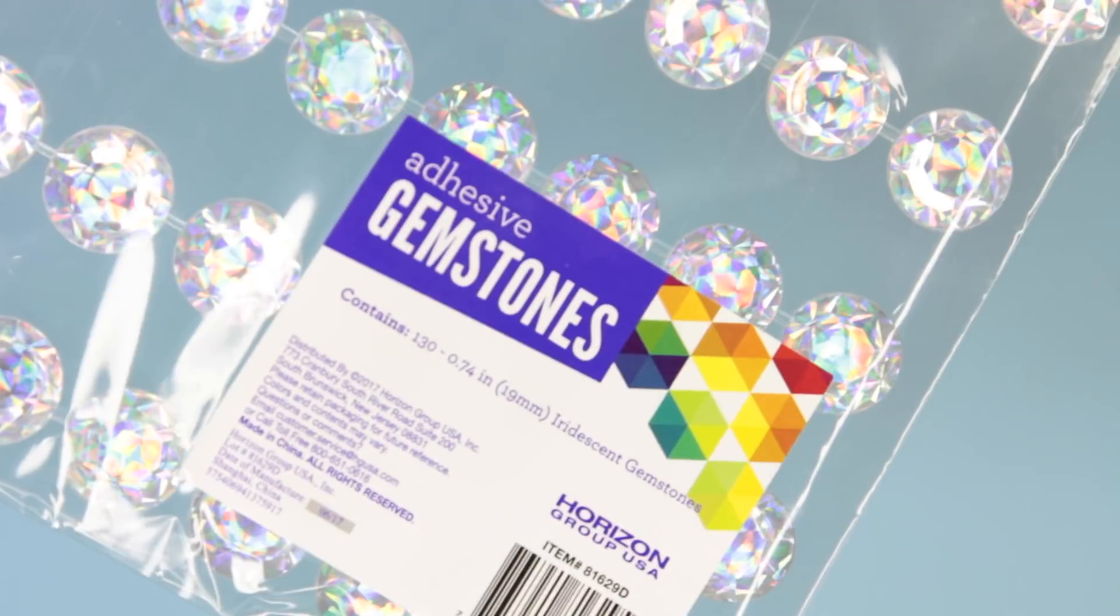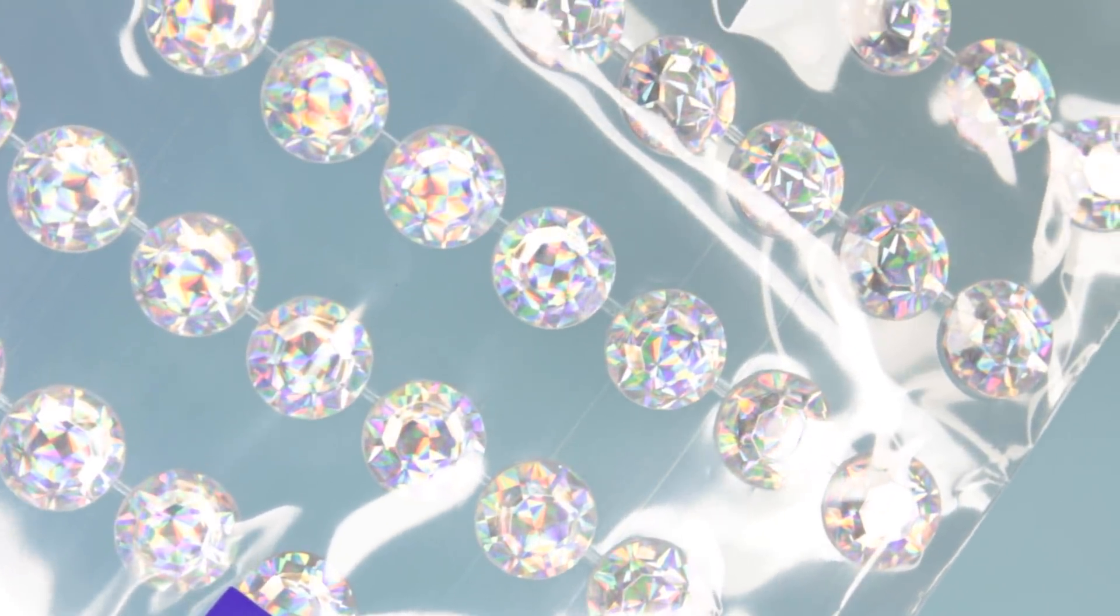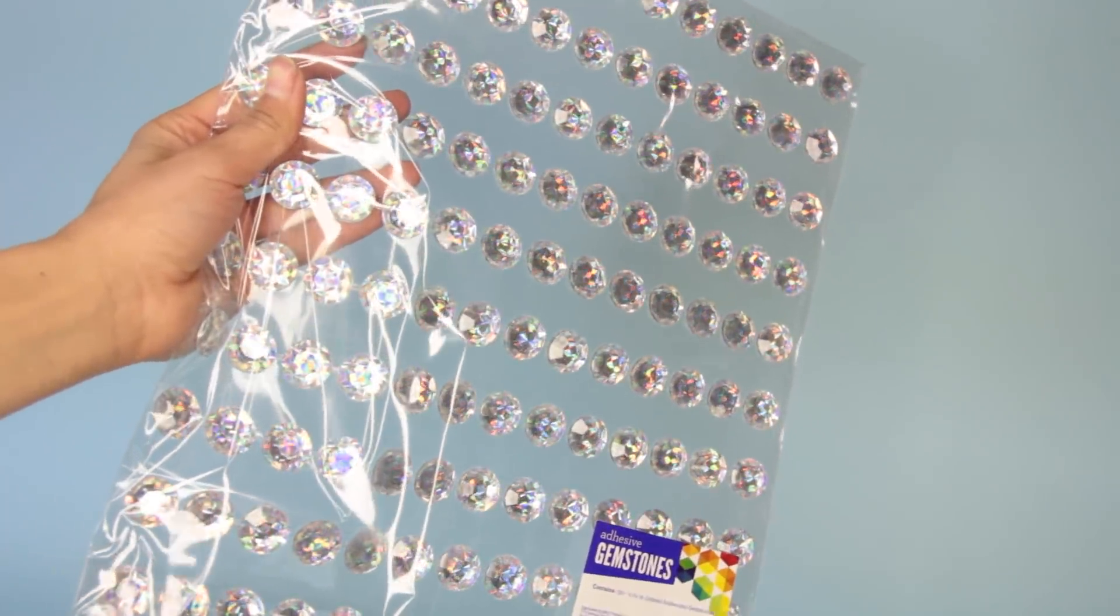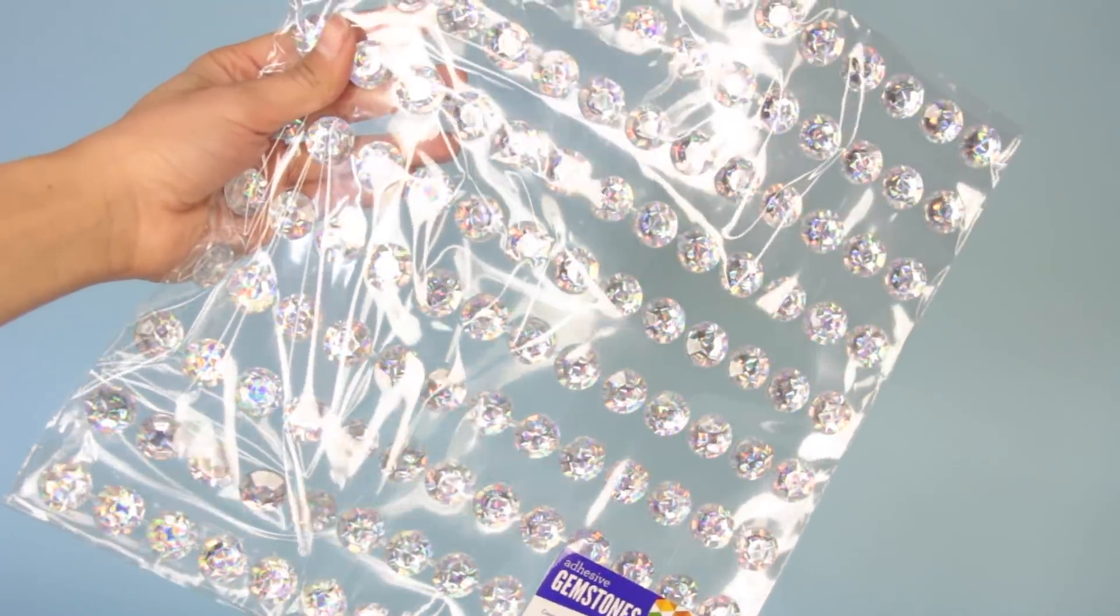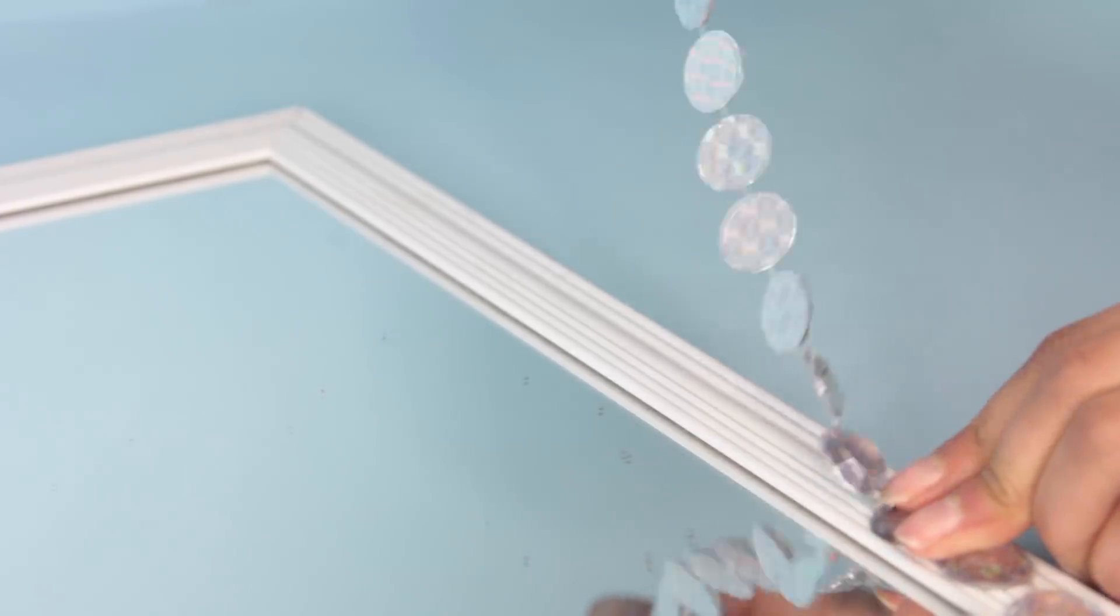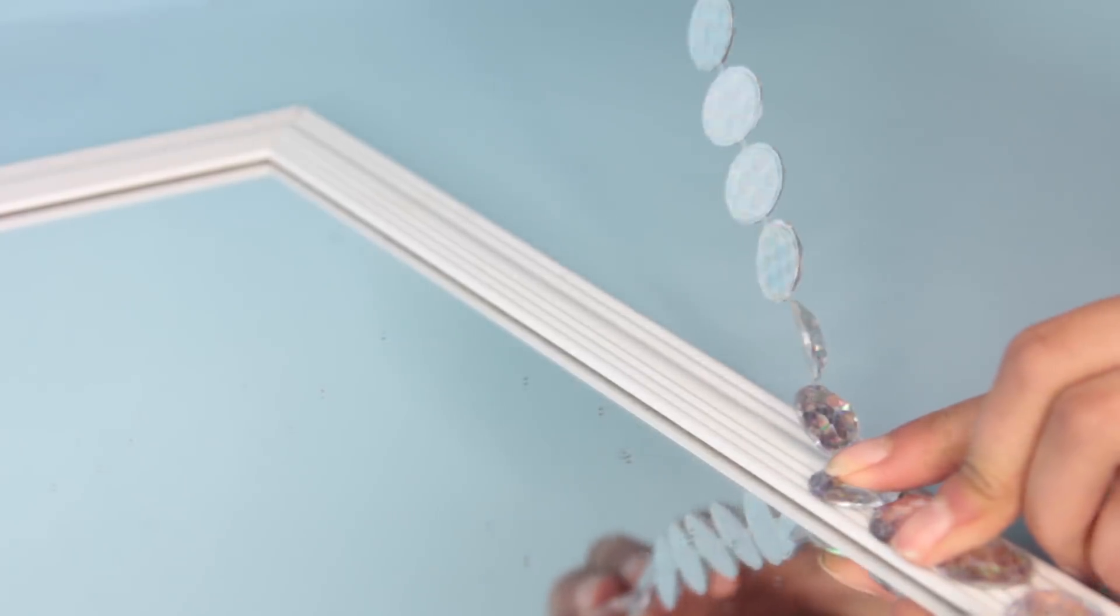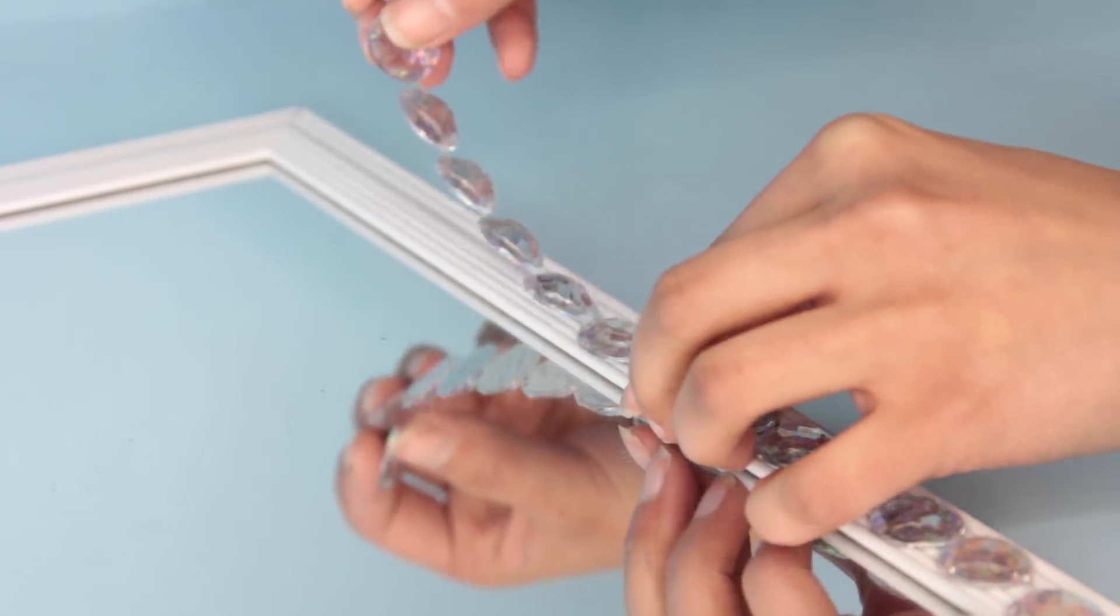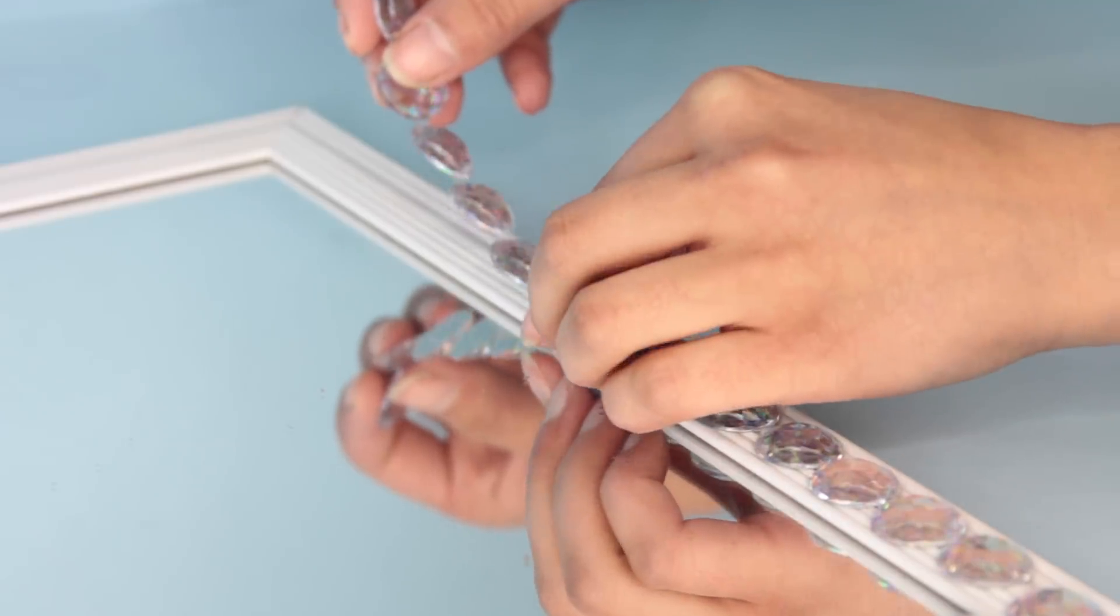So I'm going to be using these adhesive gemstone stickers that I got from Walmart. You can use the diamond wrap if you want to, but I decided to use these gemstones because they look more like what I keep seeing at Hobby Lobby. And also this is something that I know most of you guys can get, whereas Dollar Tree, it's like hit or miss all the time with what you can find at certain ones.